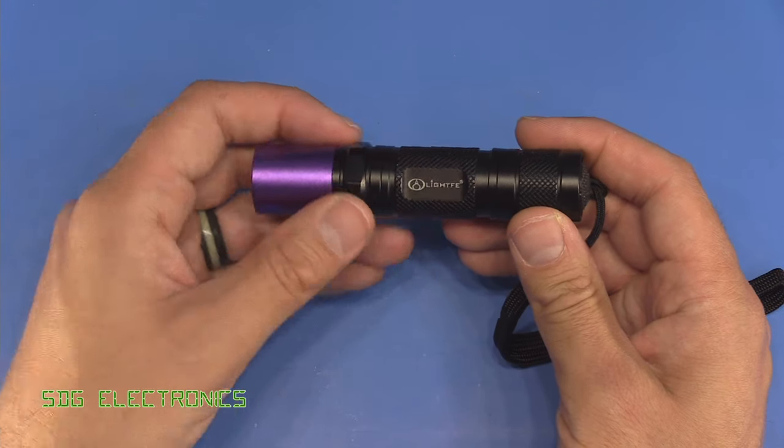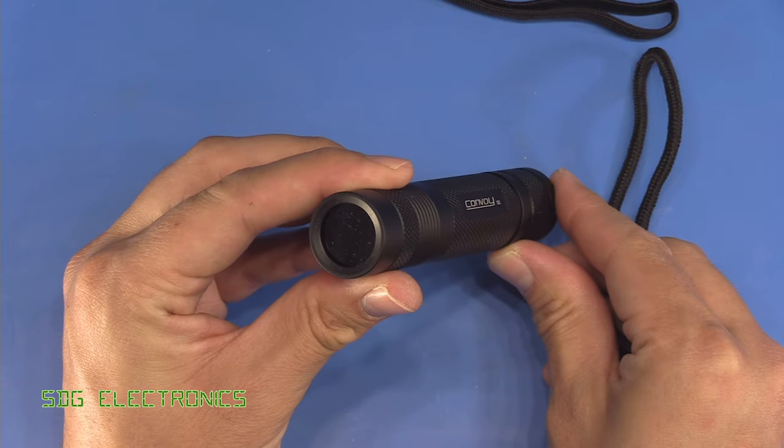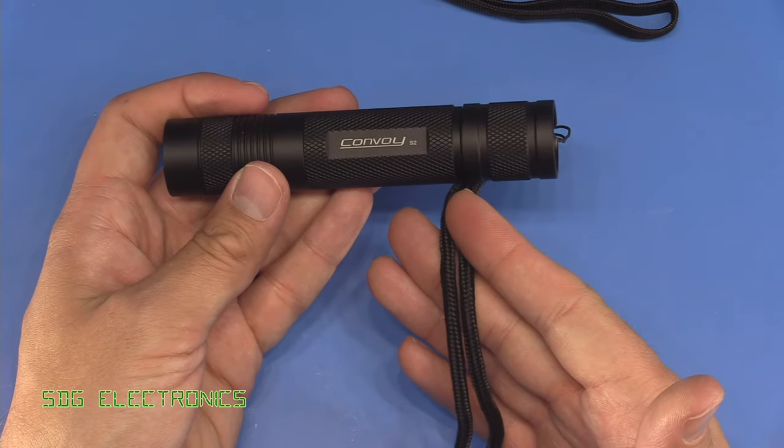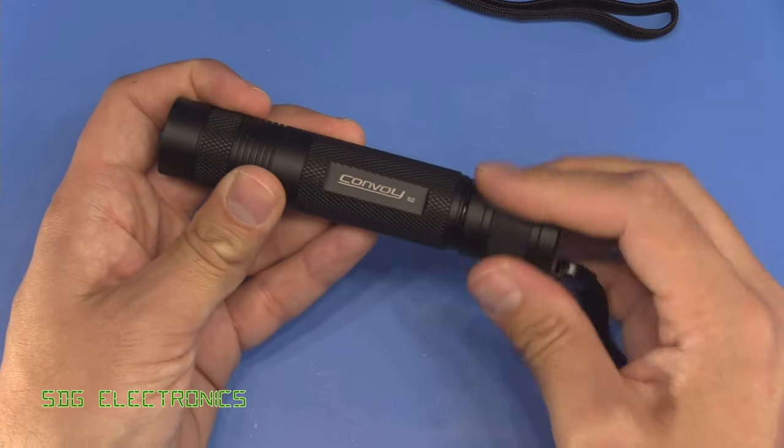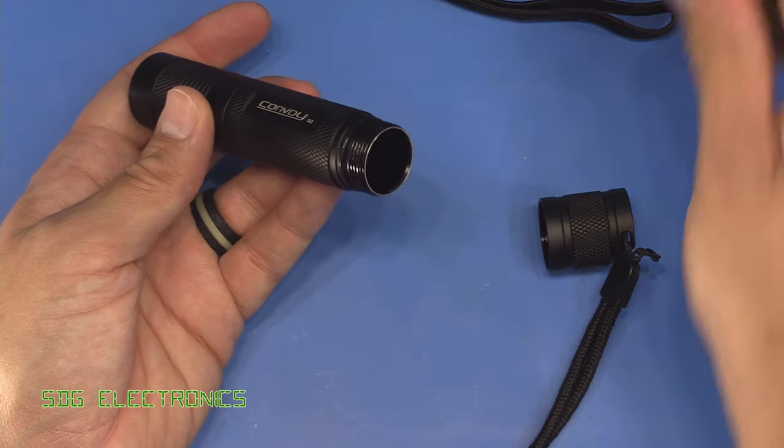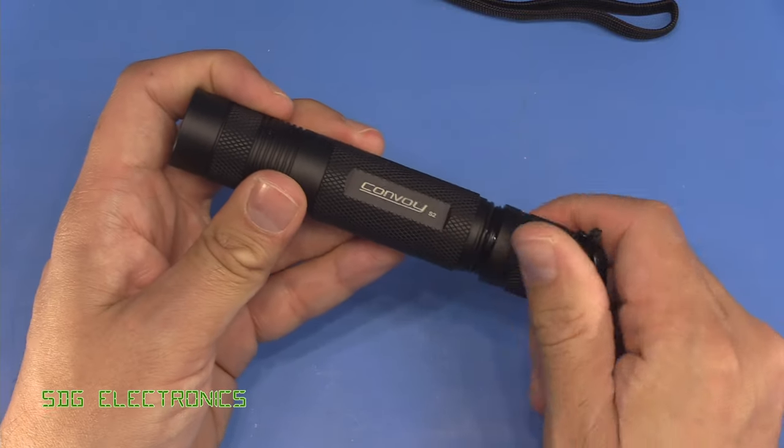So that's the Lightfay torch. Next up we've got the Convoy S2 and this is also a 365 nanometer torch. This is all that came in the box, so just the torch and the little lanyard. Again this one is submergible. It's got a little black O-ring here and this one takes an 18650 battery so we just insert that into the end.